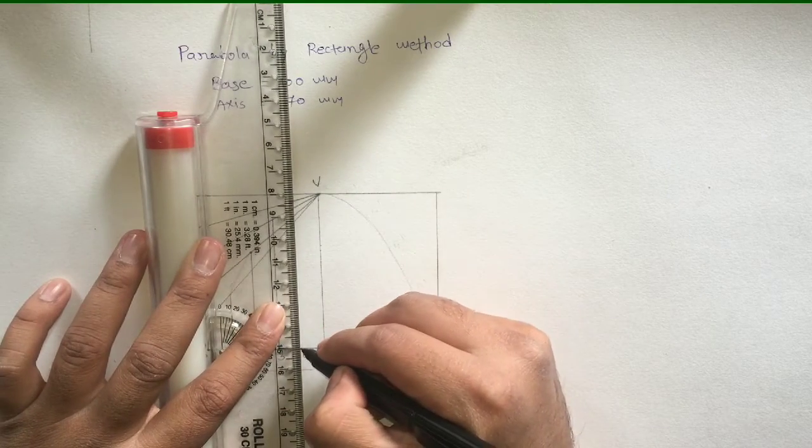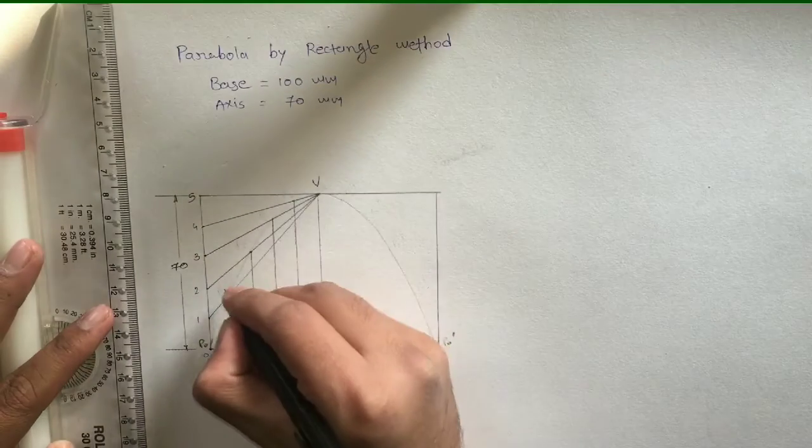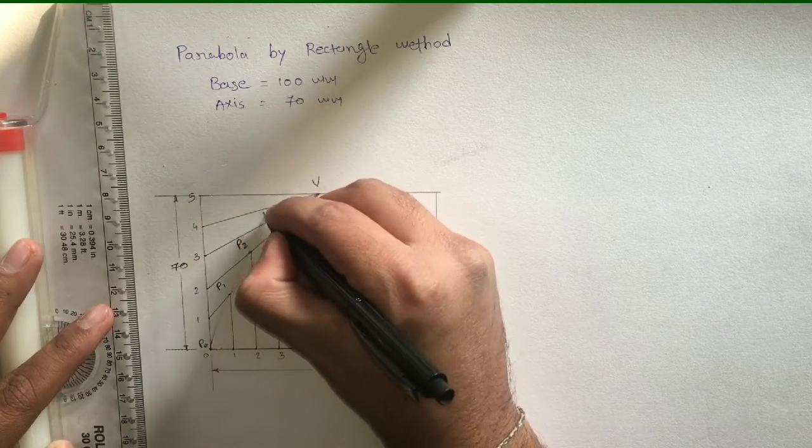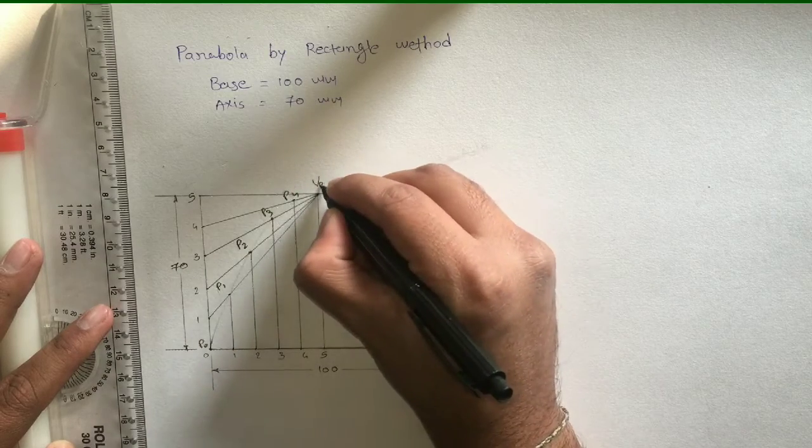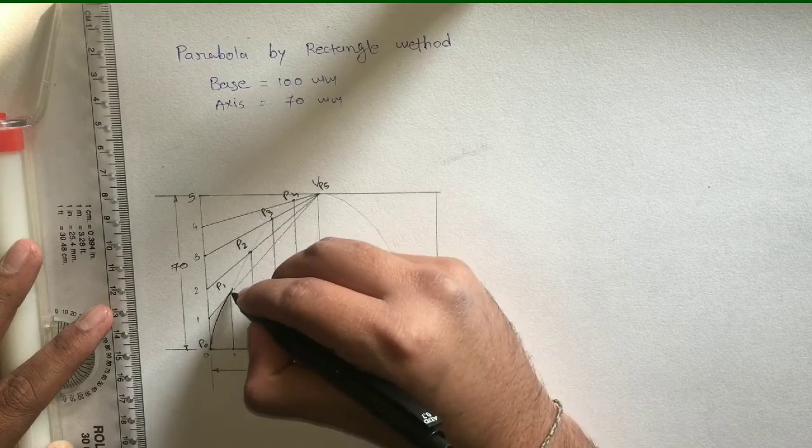From 3 to V3, from 4 to V4. All these points are points on the parabola. Connect all these points by freehand sketch.